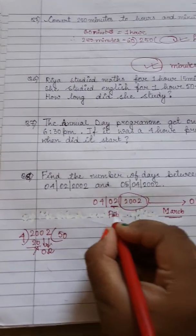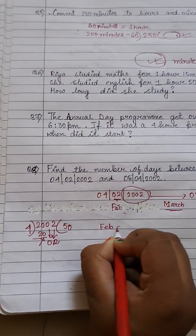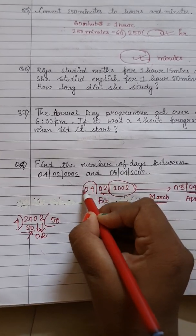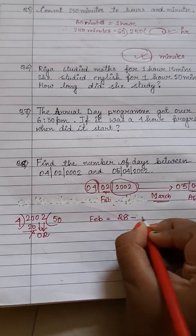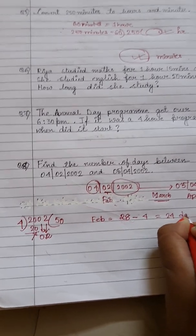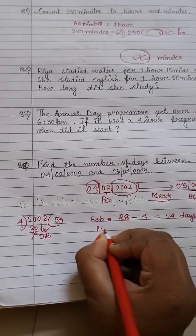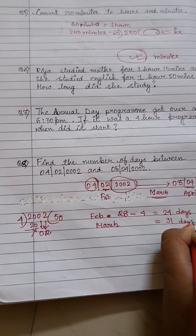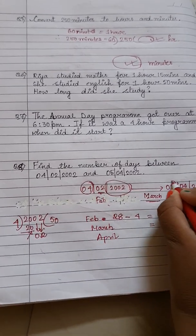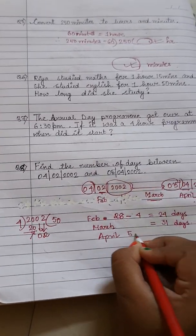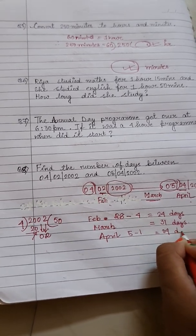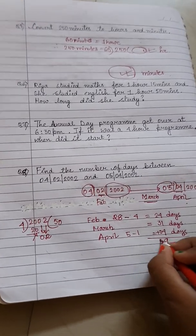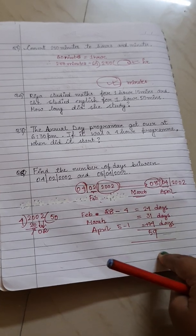Now let's calculate. February equals 28 days, and the starting date given is the 4th, so 28 − 4 = 24 days. Next, March has 31 days, so we write 31. Then in April, the ending date given is the 5th, so 5 − 1 = 4 days. Adding them: 24 + 31 + 4 = 59 days. So the total number of days is 59 days.